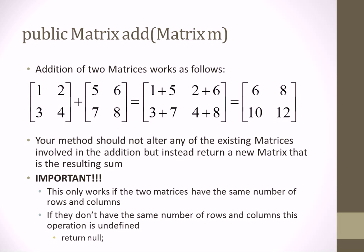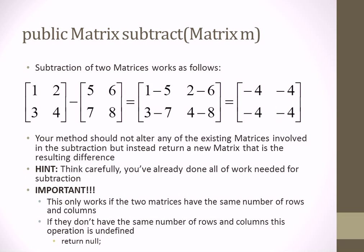For addition, you take another matrix as a parameter and add it to this matrix, returning a new matrix with the result. The intuitive approach: take each position and add it with the corresponding position in the other matrix. The sizes must match — same rows and columns — or it won't work. Before attempting the addition, do that error check and return null if the dimensions don't line up.